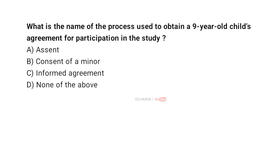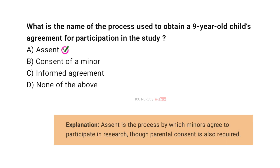What is the name of the process used to obtain a nine-year-old child's agreement for participation in the study? A. Assent. B. Consent of a minor. C. Informed agreement. D. None of the above. And the correct answer is A. Assent. Assent is the process by which minors agree to participate in research, though parental consent is also required.